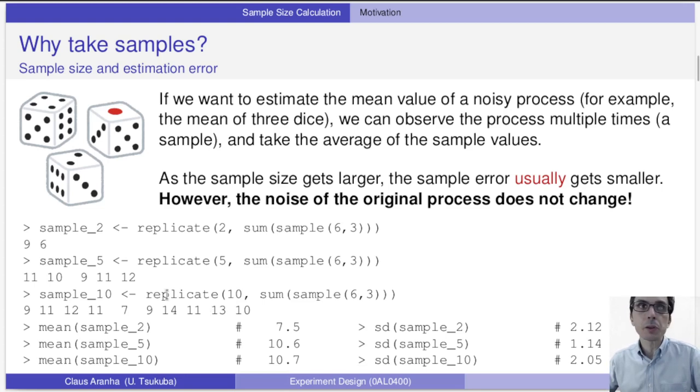Just to give an example, let's think about throwing three dices. If we throw three dices two times, we get a nine and a six, and our mean becomes something like 7.5. If we throw the dice five times, note here that actually the mean will be higher here. We got 10, 11, 9, 11, 12.